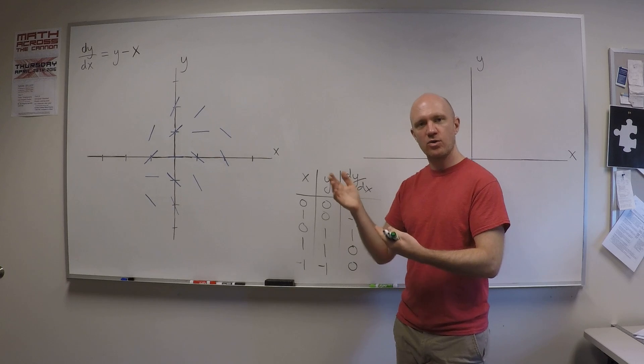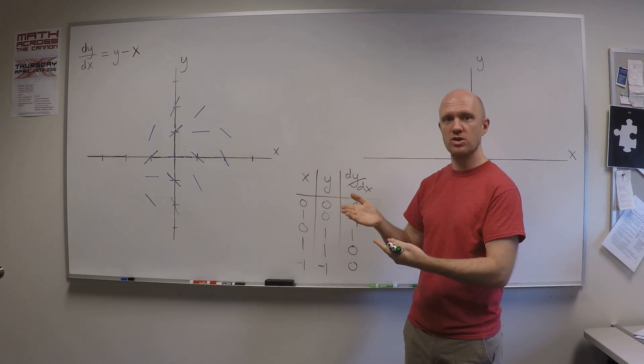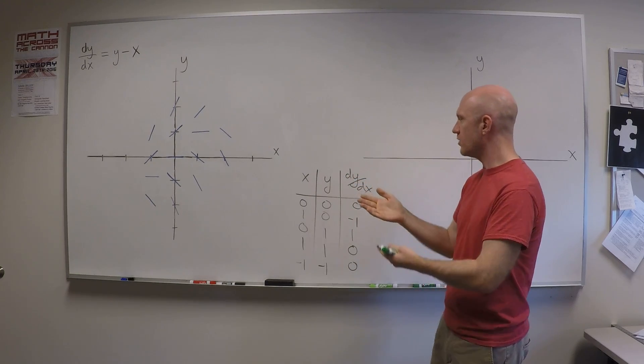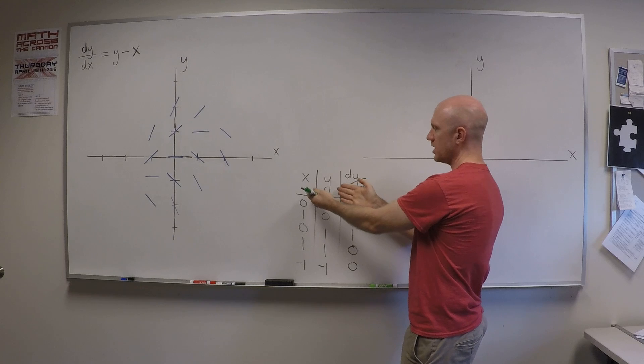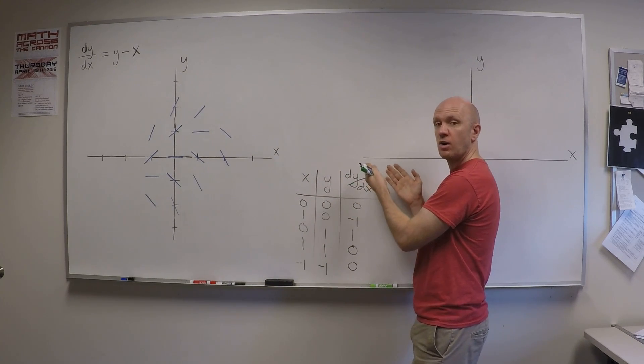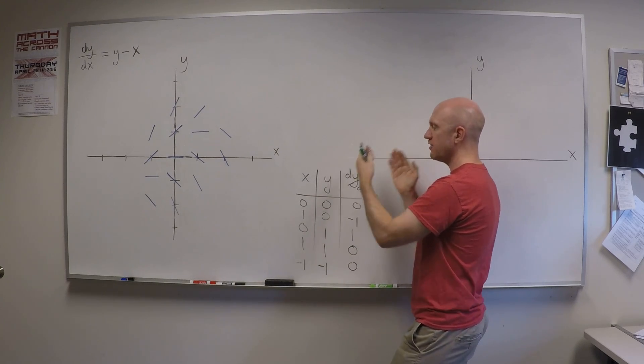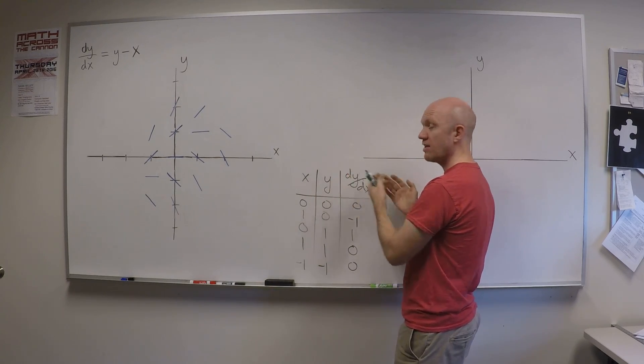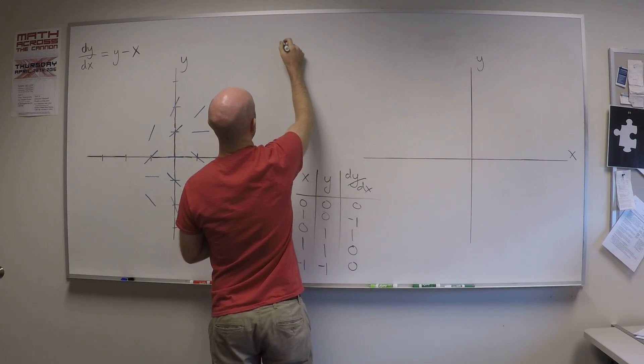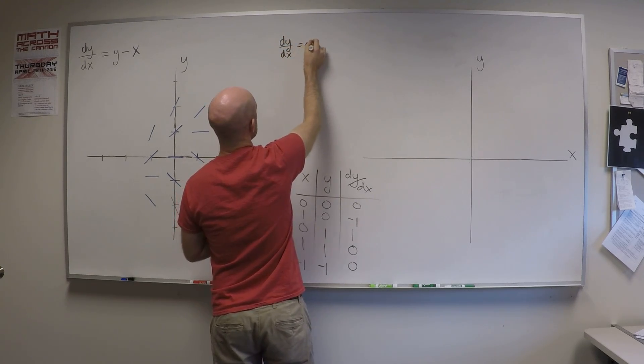An isocline is a line or a curve on which the derivative has constant value for this differential equation. So it sort of flip-flops things around. In this case, what we were doing is choosing x and y values, then computing the value of the derivative. What we're going to do using the method of isoclines is choose a value for the derivative and then find all the x's and y's which have that value. And it actually is a lot easier. So let's choose a value for the derivative.